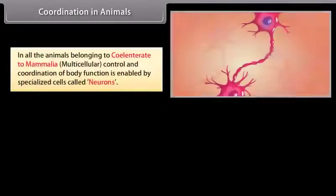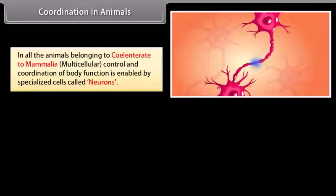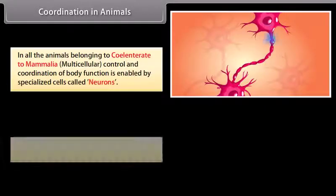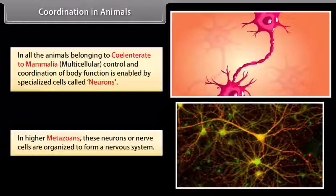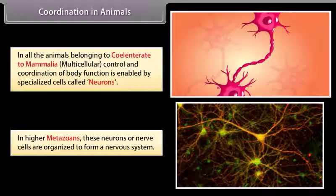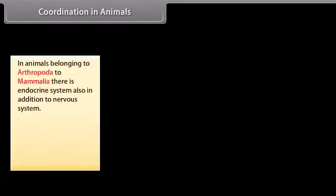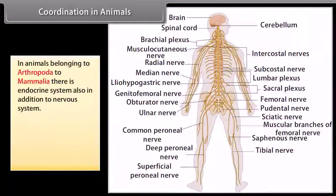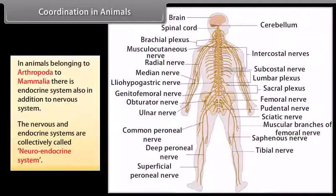In all animals, from coelenterates to mammalia, multicellular control and coordination of body functions is enabled by specialized cells called neurons. In higher metazoans, these neurons or nerve cells are organized to form a nervous system. In animals belonging to arthropoda to mammalia, there is also an endocrine system in addition to the nervous system. The nervous and endocrine systems are collectively called the neuroendocrine system.